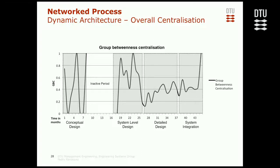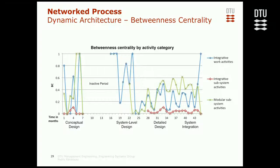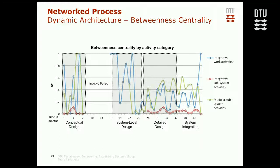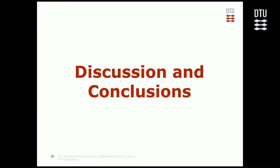In system integration, the overall centralization also went up. We can do the same experiment broken down by activity categories — integrative work activities, integrative subsystem activities, and modular subsystem activities. In the first two stages, integrative work activities were expected to be more dominant. Then in detail design, modular subsystem activities went up as expected. And in the last stage, there was a trend toward high information centralization through integrative work activities. This seemed to be a good indication of the robustness of the method, although it was just one case study.